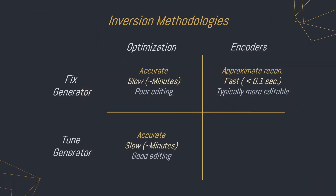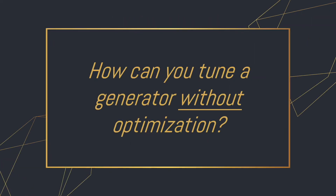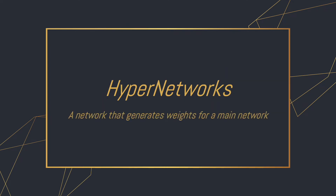Adding PTI to our table, we're left with one empty cell, and this is where HyperStyle comes into play. We asked ourselves: how can you tune a generator without optimization? Our answer: hypernetworks, which are networks that learn to generate weights for a separate network — in our case, the StyleGAN generator.